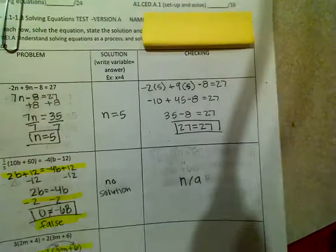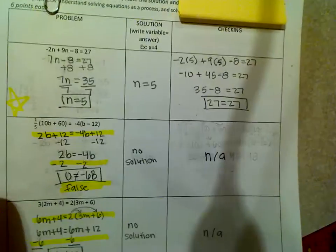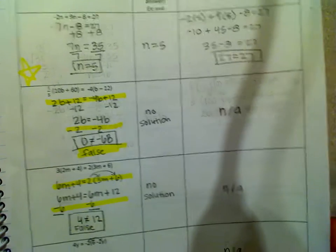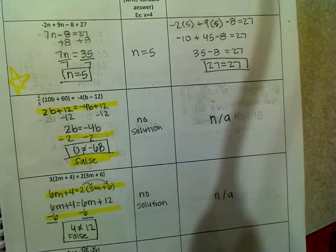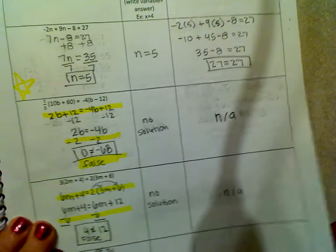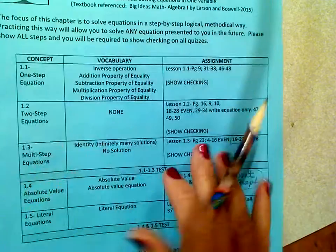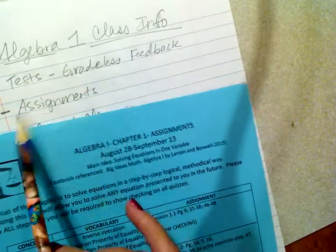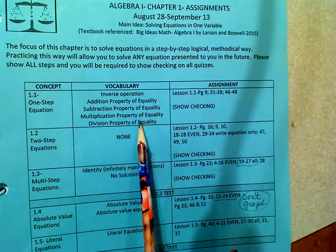So let's say your child, and I will be offering a retake on Tuesday during WIN time. The thing is they have to make corrections and they have to make sure that they have all their assignments completed and checked.